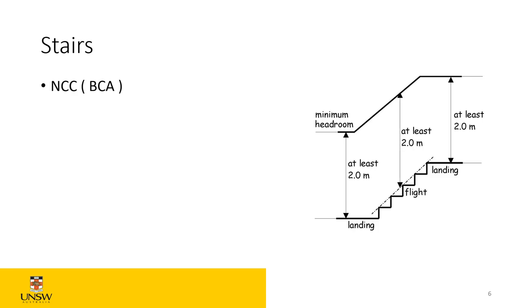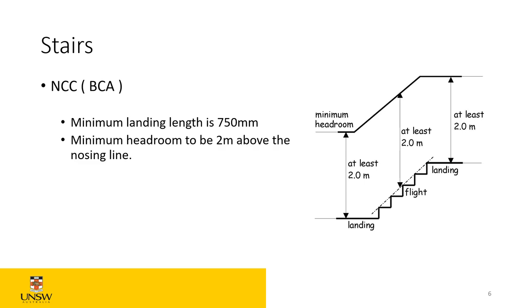According to the BCA, the minimum landing length is 750 millimetres. The reason is that when you stand there and have a door, you need to be able to open the door and still walk. The minimum headroom — the head height — is two metres, and you take this line from the nosing upward to the line above it. Nothing under two metres is permitted, otherwise it doesn't comply. That covers the stairs recap.